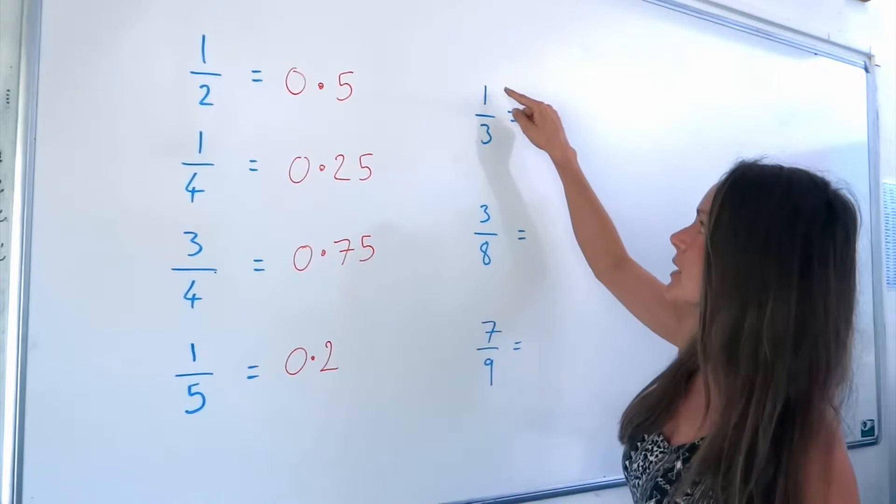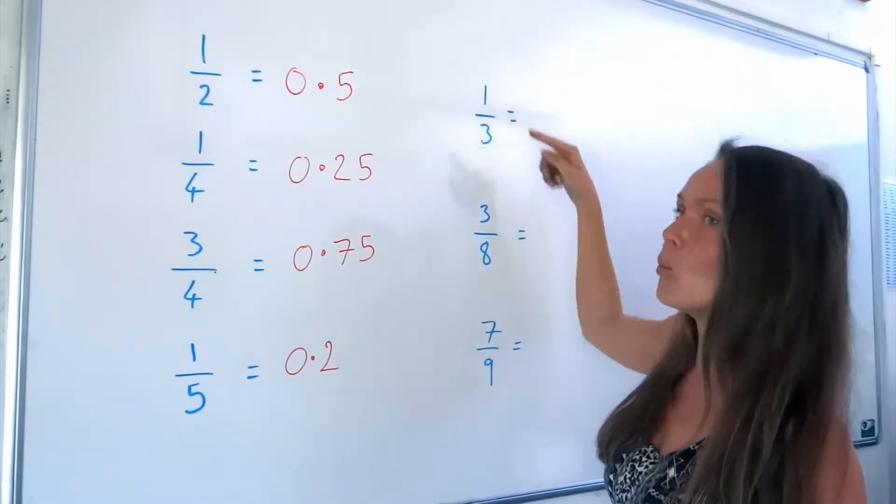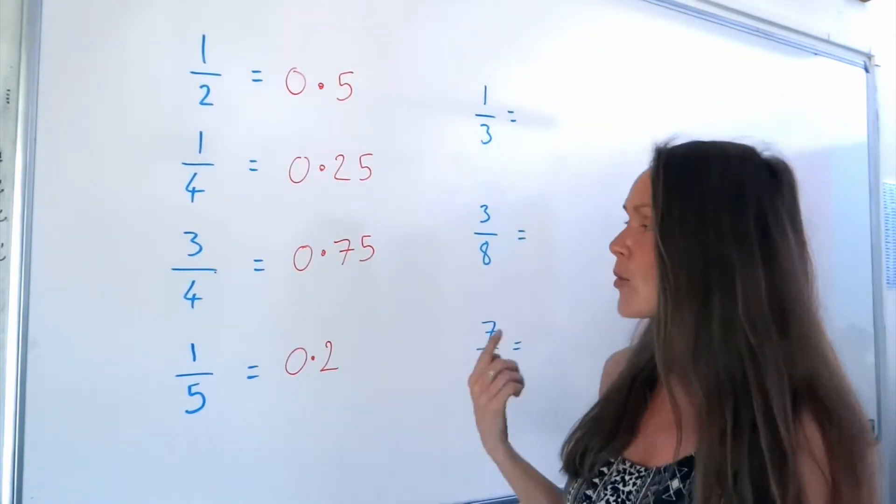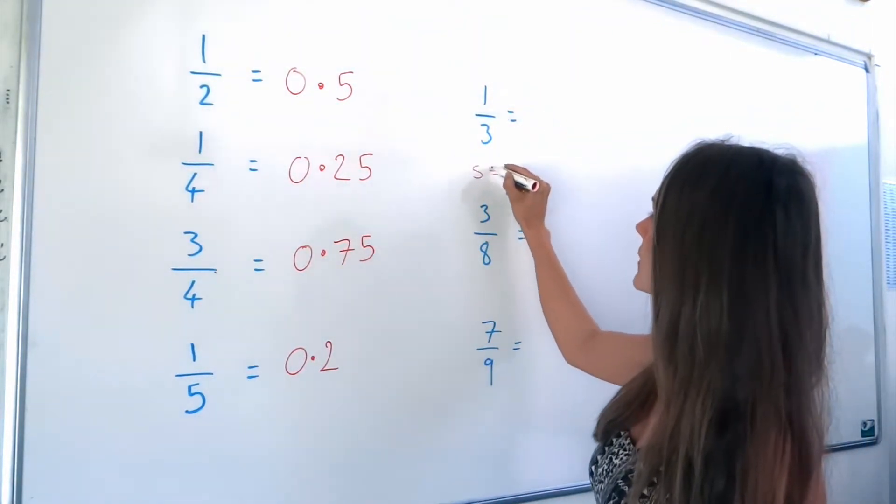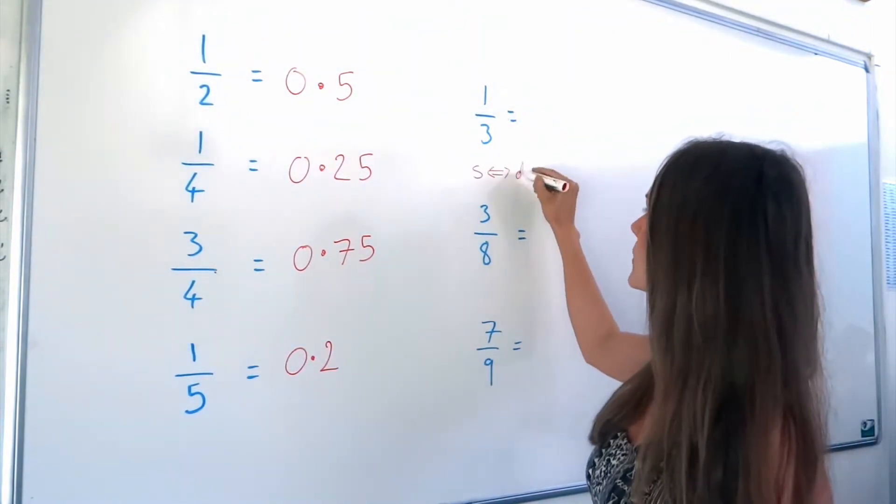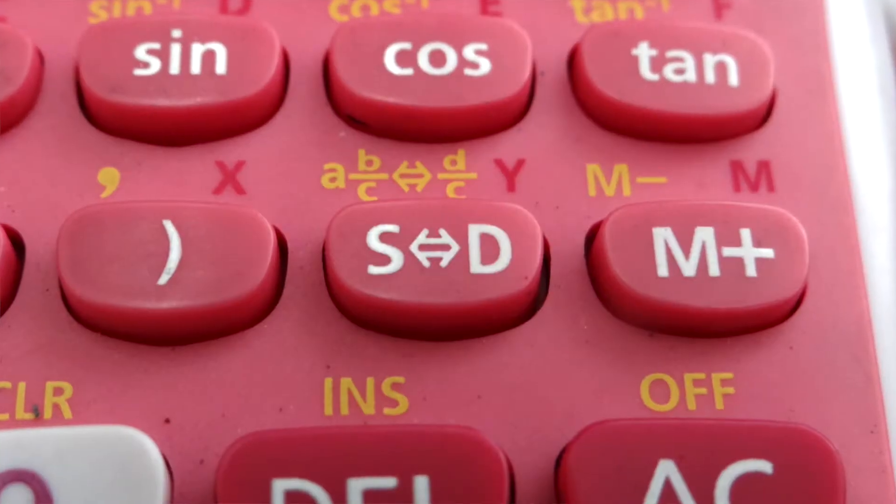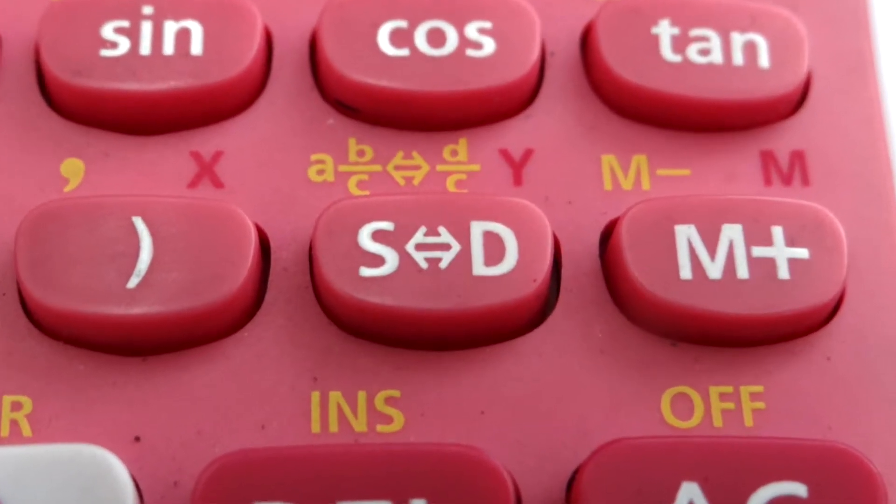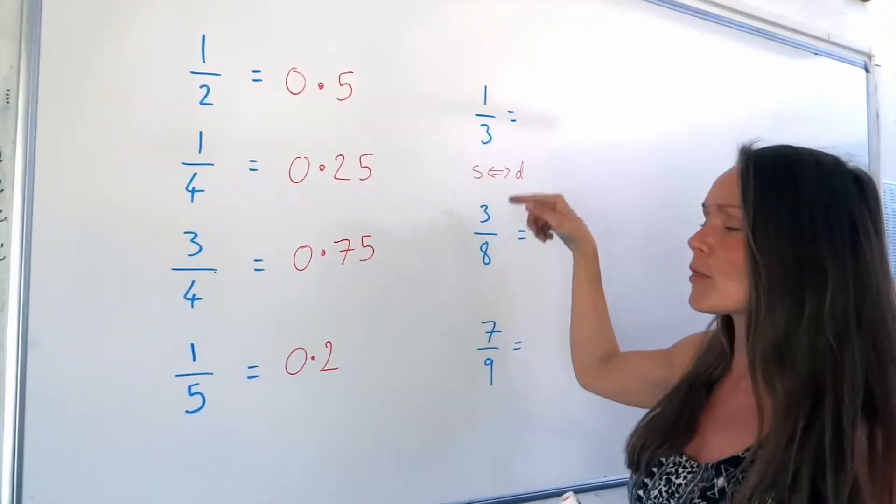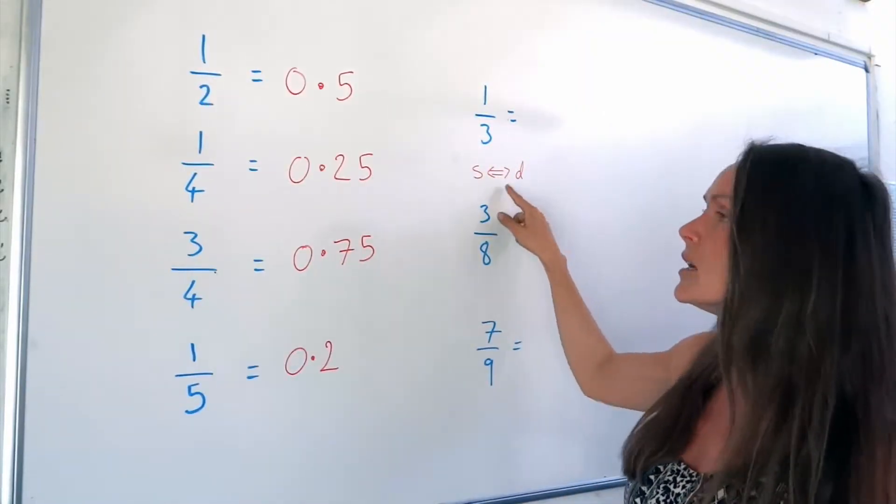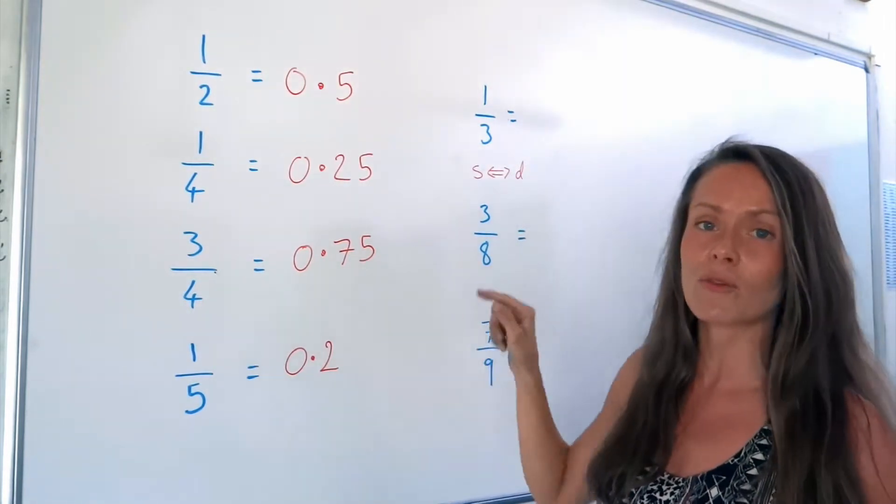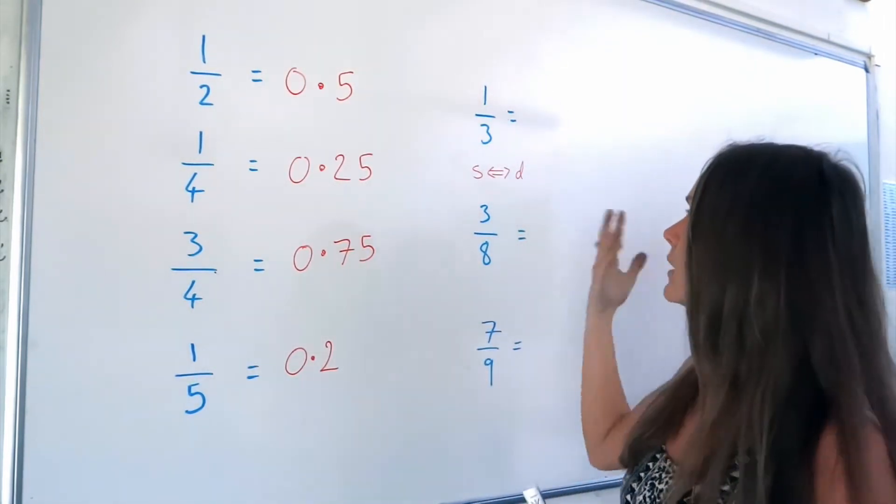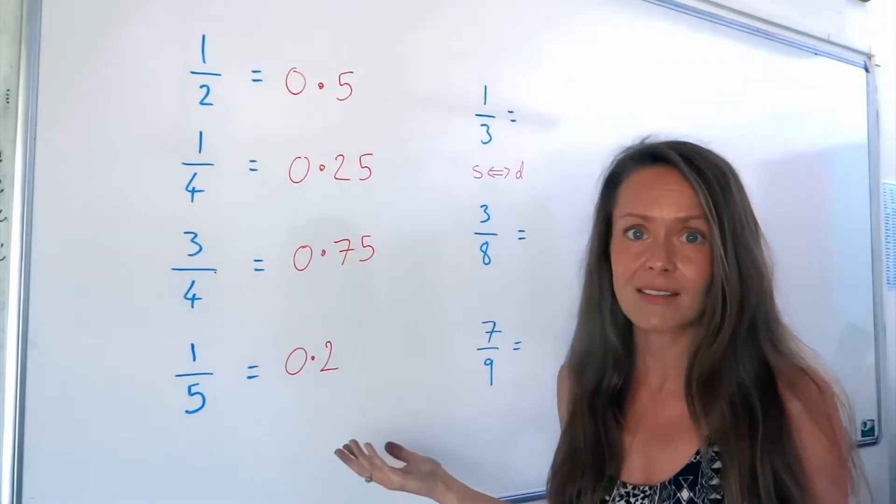All you need to do is type in 1 divided by 3, or 1 over 3 in the calculator, press equals, and then on your calculator, there should be a button that converts between a fraction and a decimal. On my calculator, it's an SD button. So if I press 1 divided by 3 equals, and then this button, it changes it to a decimal. If I press it again, it turns it back into a fraction, and so on. So if you can use a calculator, that's it.